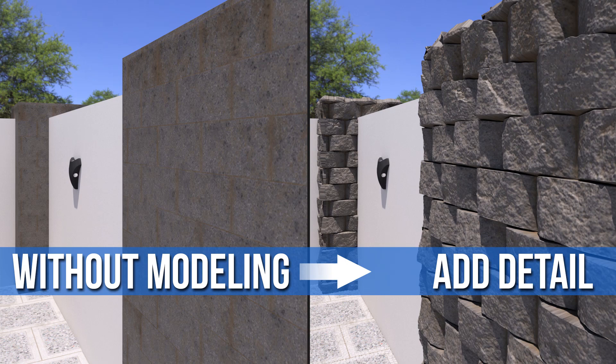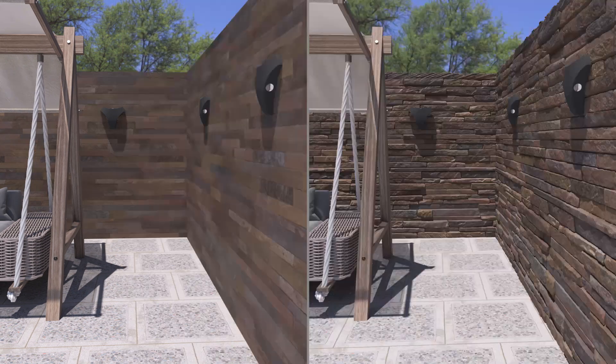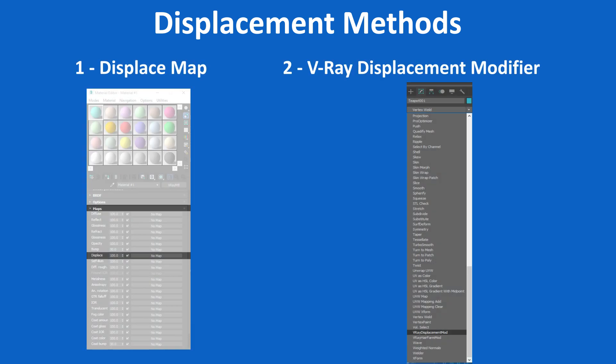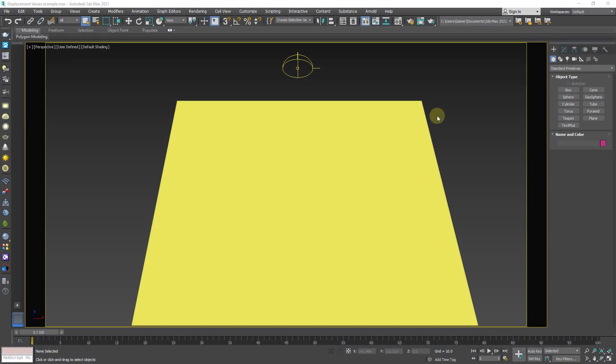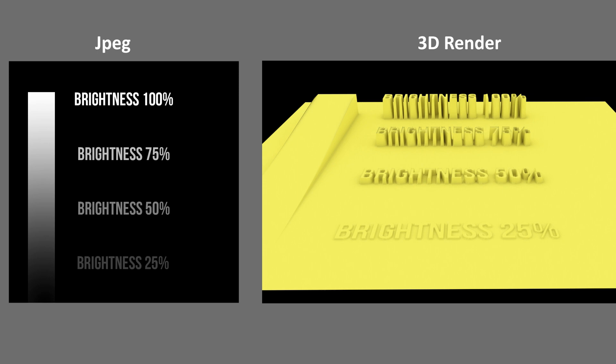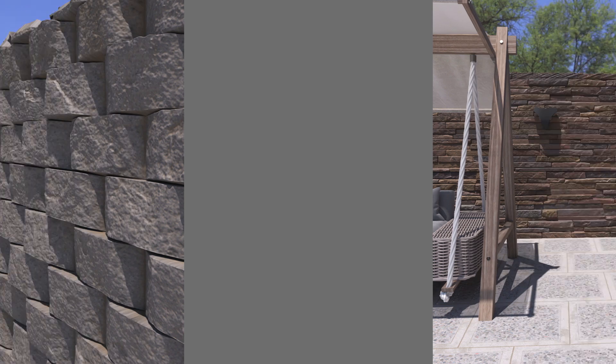Hello guys, welcome to SWK Tutorials. Today's topic is V-Ray displacement. V-Ray displacement is a trick to add detail to your geometry without having to model it — it actually modifies the actual geometry. There are two ways to perform displacement; in this tutorial we will learn the V-Ray displacement modifier as it has more control. First I will use an example to make your concepts clear, then we will do realistic archway examples.